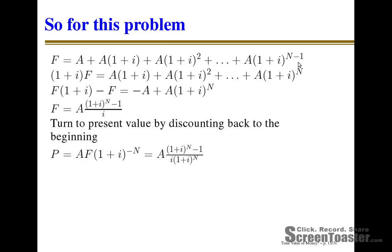So you have two very similar equations. Then you take the difference between the two — the lower equation less the upper equation. On the left-hand side you have F times (1+i) less F. Then there's an orgy of cancellation: each matching term in the lower equation cancels with its mate in the upper equation, and so on down the line. It turns out only two terms don't cancel each other out.